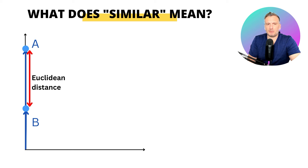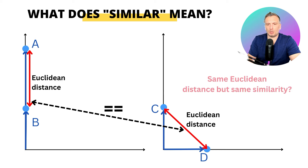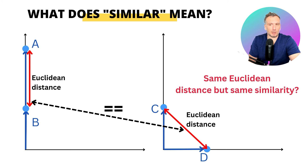For example, here we have two points A and B on the same axis, and we measure a specific Euclidean distance between those two points. Here, we have two points C and D on two different axes, and we measure the same Euclidean distance between those two points. Do we actually have the same similarity between those two points?